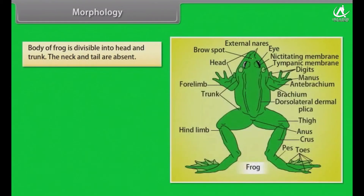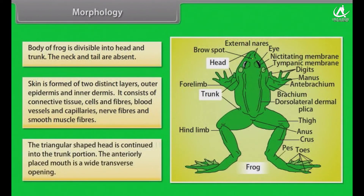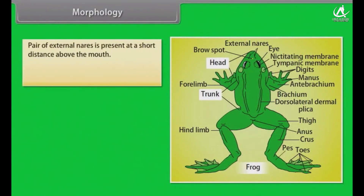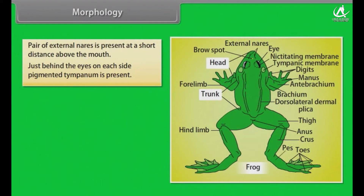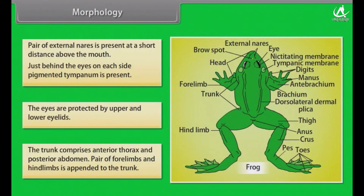Morphology. The body of frog is divisible into head and trunk. The neck and tail are absent. Skin is formed of two distinct layers: outer epidermis and inner dermis. It consists of connective tissue, cells and fibres, blood vessels and capillaries, nerve fibres and smooth muscle fibres. The triangular shaped head is continued into the trunk. The anteriorly placed mouth is a wide transverse opening. A pair of external nares is present at a short distance above the mouth. Just behind the eyes on each side, a pigmented tympanum is present. The eyes are protected by upper and lower eyelids. The trunk comprises anterior thorax and posterior abdomen.